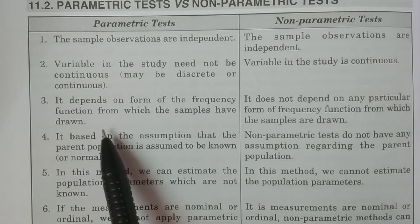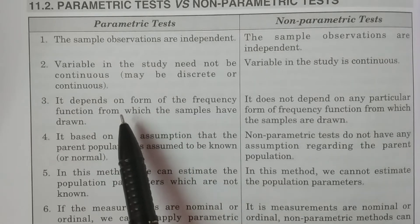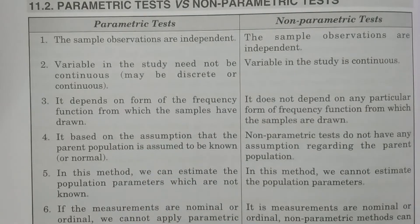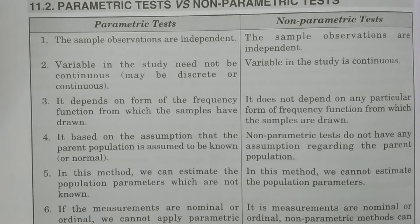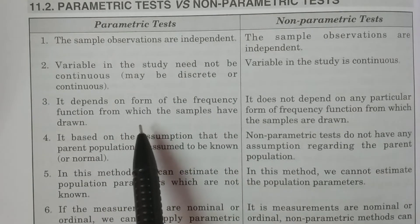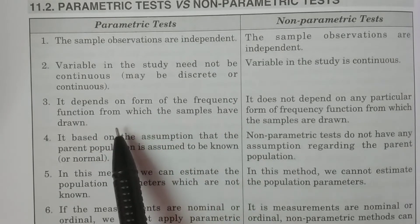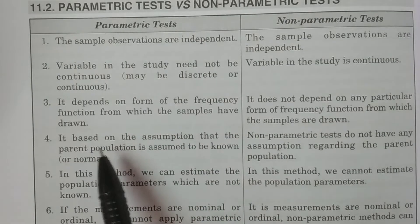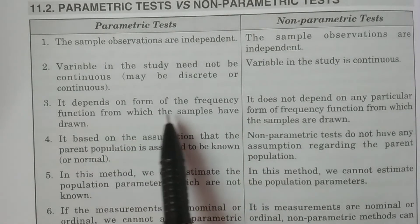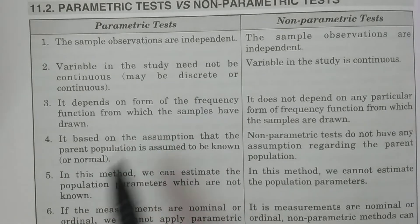The third point: the parametric test depends on the form of the frequency function from which the samples have been drawn. That is, for the particular population from which we draw sample observations, a specific frequency function is required. For the non-parametric test, it does not depend on any particular form of frequency function from which the samples are drawn.